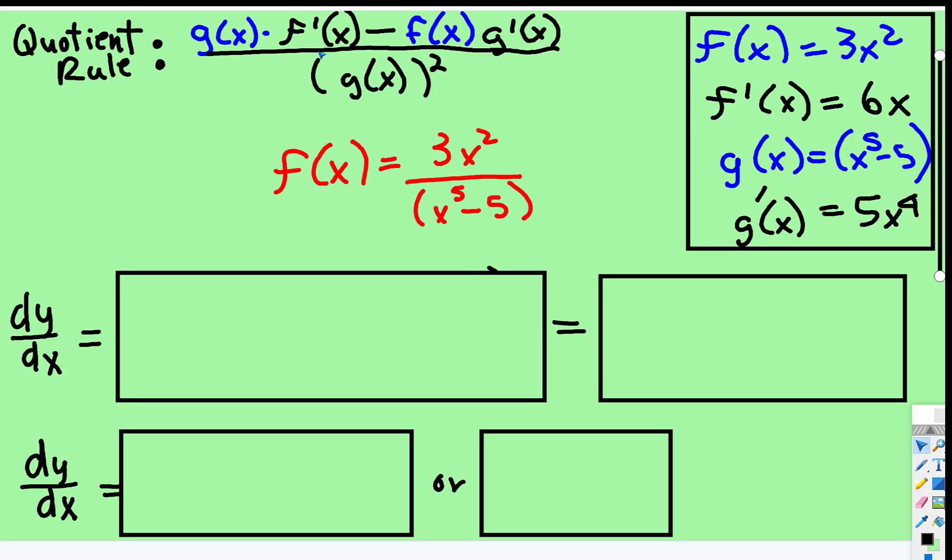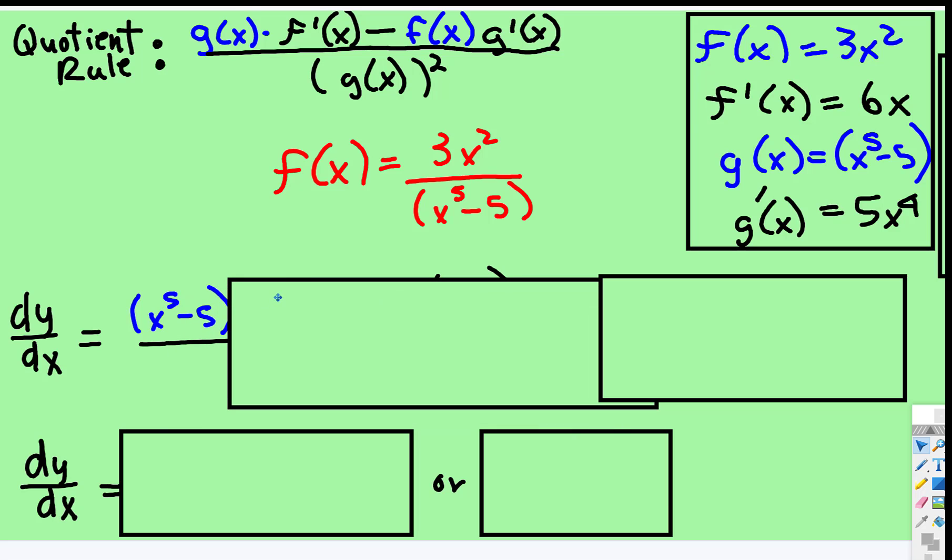And then we're going to use this formula. So we first take g, that's going to go first. So there's our g times f prime, so times 6x.